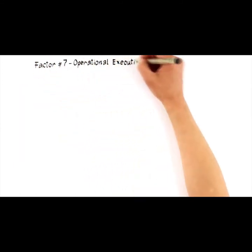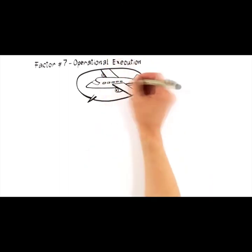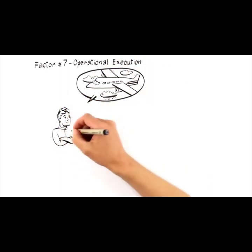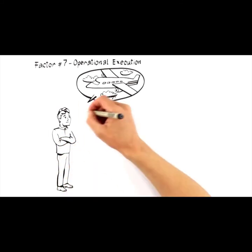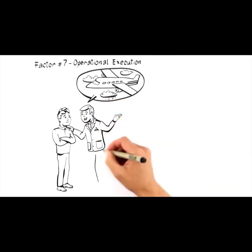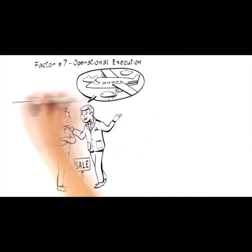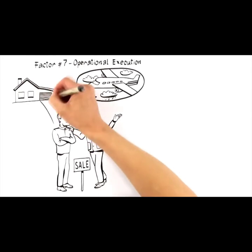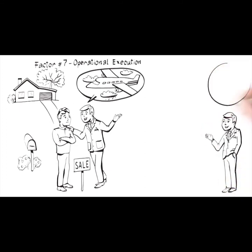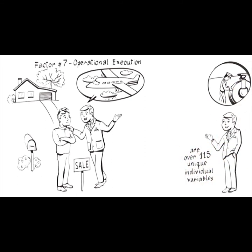The last factor that brings everything together is factor number seven, operational execution. The sale of your home is much like flying in an airplane. You want an expert in the cockpit who's flown hundreds of times and follows a set of documented processes to get your plane safely into the air and back on the ground again. You would never want your pilot to be the person who is checking the air in the tires, fueling the plane, washing the windows, or serving drinks up and down the aisle.